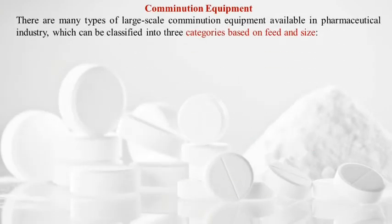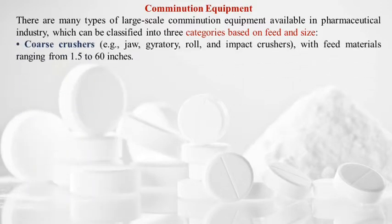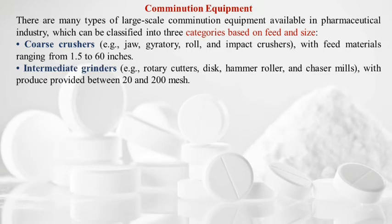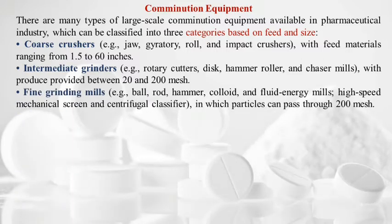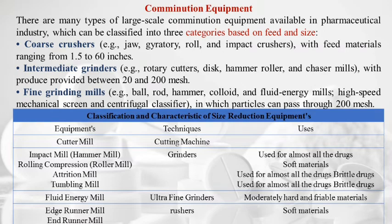Comminution equipment is classified into three categories based on feed size: coarse crushers — jaw, gyratory, roll, and impact crushers with feed material ranging from 1.5 to 60 inches; intermediate grinders — rotary cutter, disk, hammer, roller, and chaser mills producing 20–200 mesh; fine grinding mills — ball, rod, hammer, colloid, fluid energy mill, and high-speed mechanical with centrifugal classifier where particles pass through 20–200 mesh.